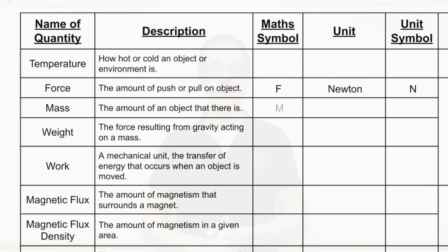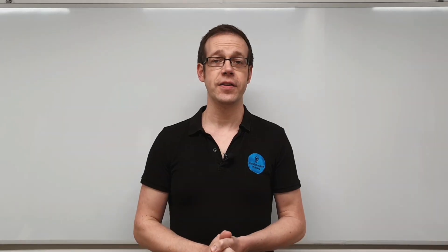Mass is basically a measurement of how much of something there is. We give it the mathematical symbol lowercase m, we measure mass in kilograms, and we give it the unit symbol kg. Notice that that is a lowercase k — that's quite important. This is also the first SI unit we've come across that has a prefix: kilo, which means a thousand. So the SI base unit for mass is 1000 grams. It's a little bit of an oddity in the SI system, but that is the base unit, so we leave it in kilograms when doing calculations.